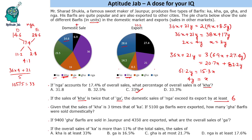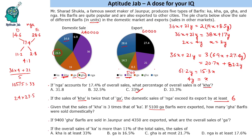It says 5100 Gha barfis were exported. Gha is 8.5%, so 5100 is 8.5%, meaning export total is 60,000. We know the ratio is 4:1, so if export is 60,000, domestic has to be 240,000. Now Gha (the green one) is 23.5% of 240,000. So 24 times 23.5: 24 times 24 is 576 and half is 12, giving 564. By the range, that is 56,400 Gha barfis sold domestically.